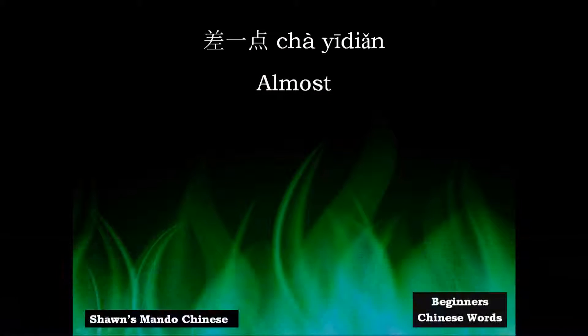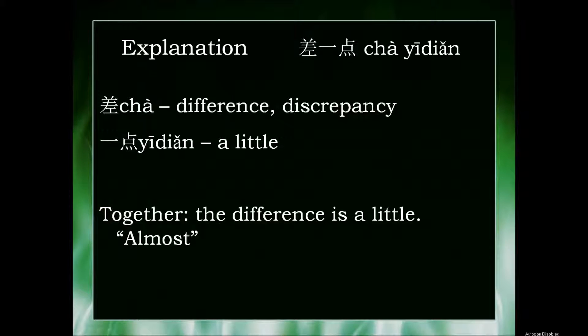Hey guys, this video is about the Chinese word 差一点, which means 'almost'. Here's a brief explanation about the characters in this word. The first one is 差, which means difference or discrepancy. The second is 一点, which means a little. So together, the difference is a little — or almost.